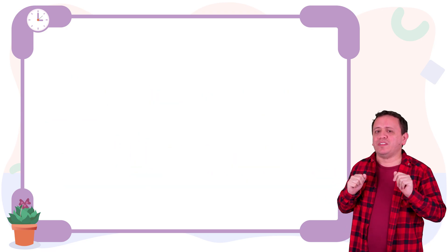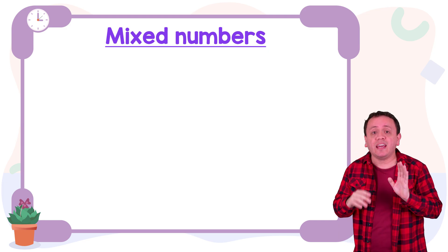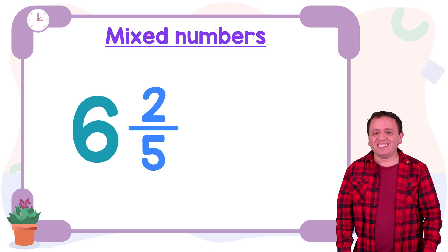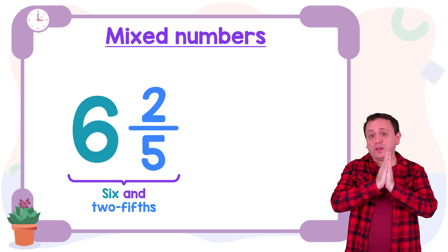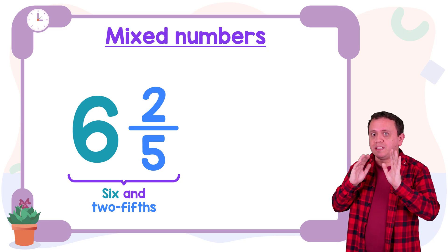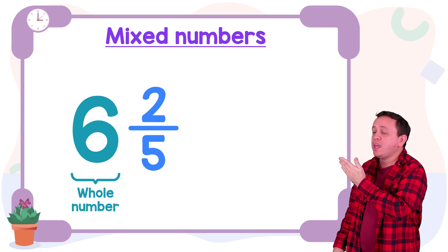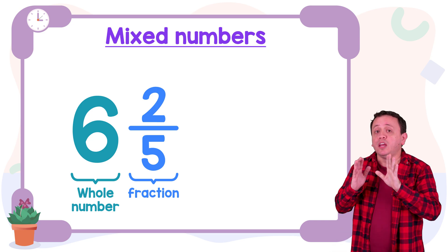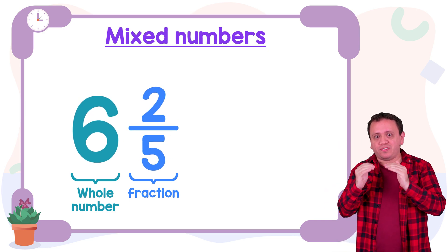Now let's focus on our topic, the mixed numbers. Here I have the first example. This mixed number is read as 6 and 2 fifths. As you can see, this mixed number contains a whole number and a fraction. Yes, here we have 6 wholes and the fraction 2 fifths.